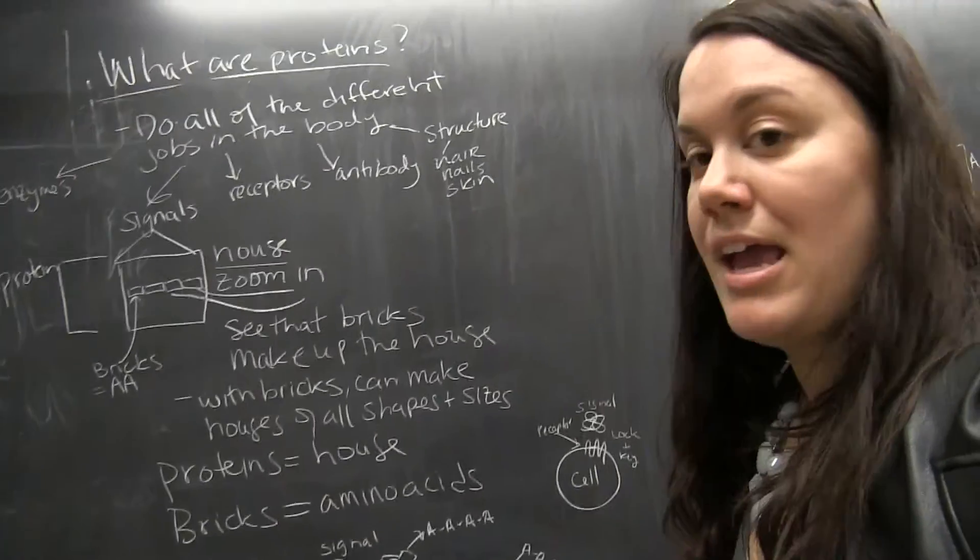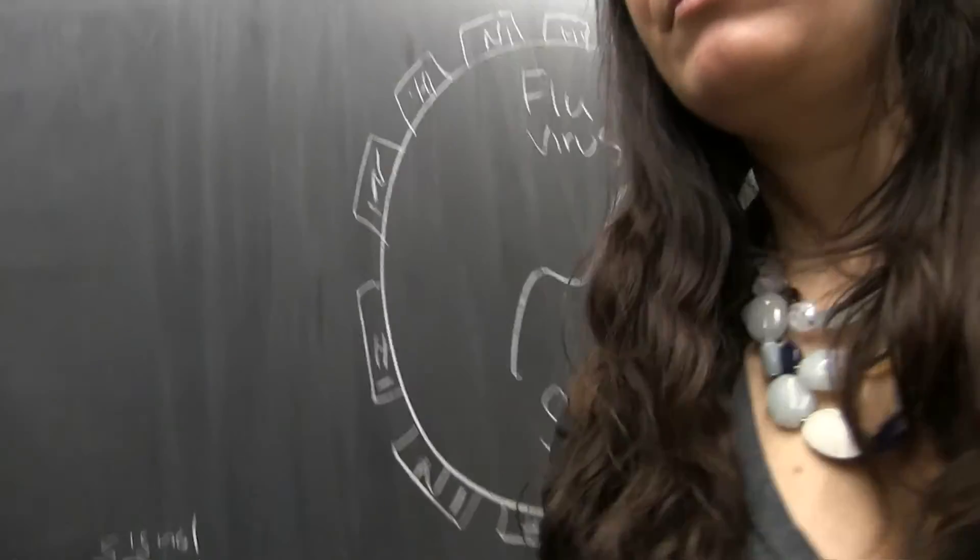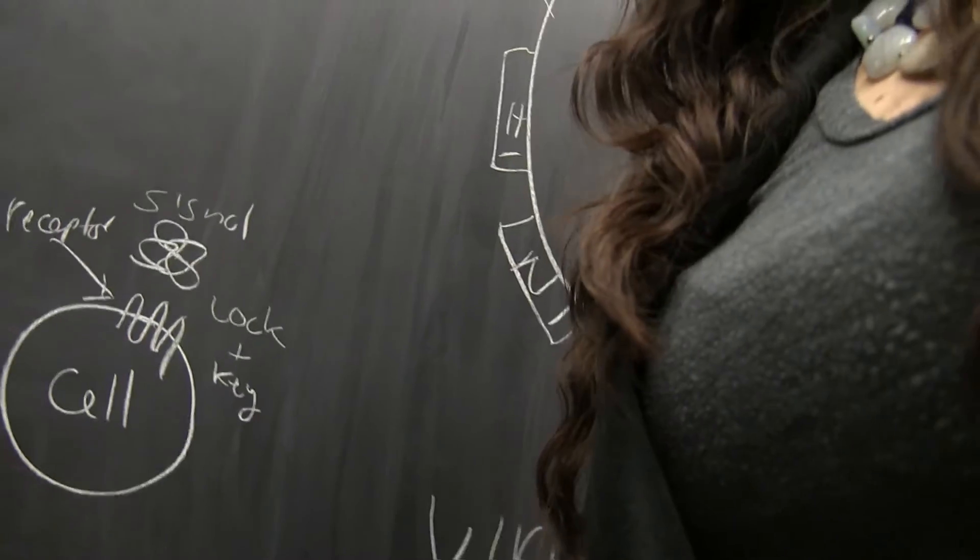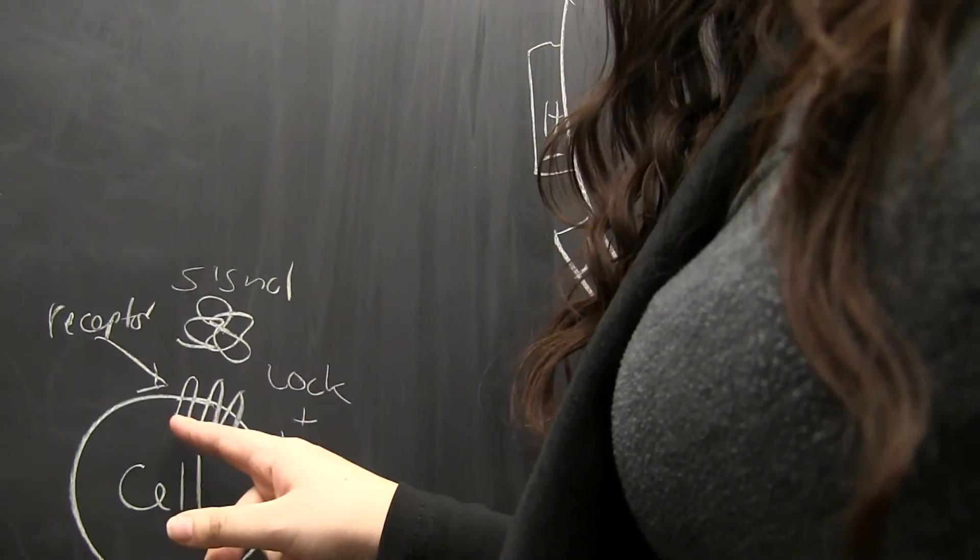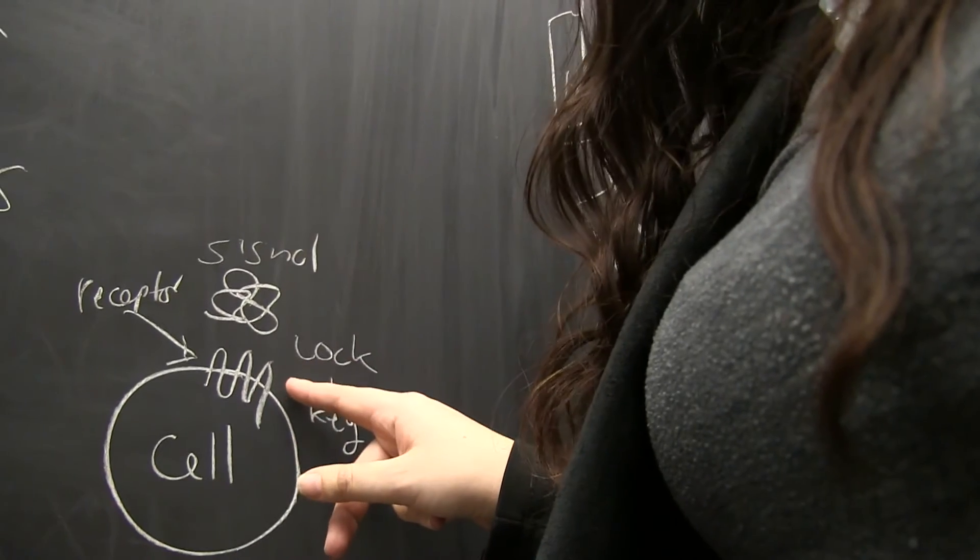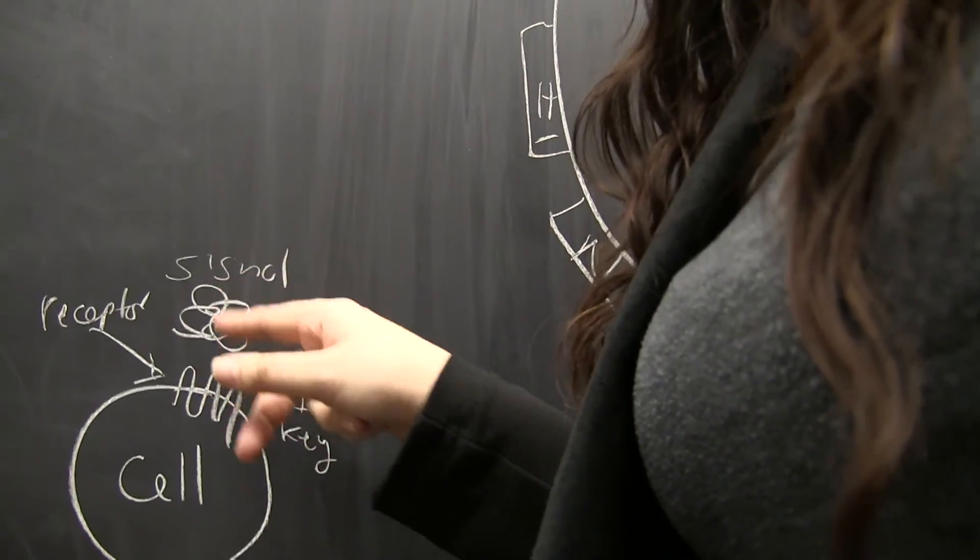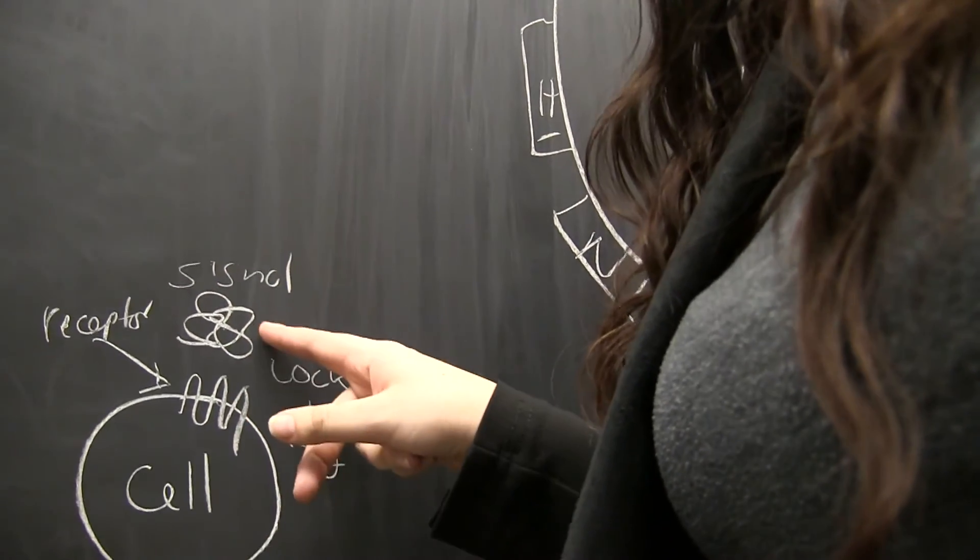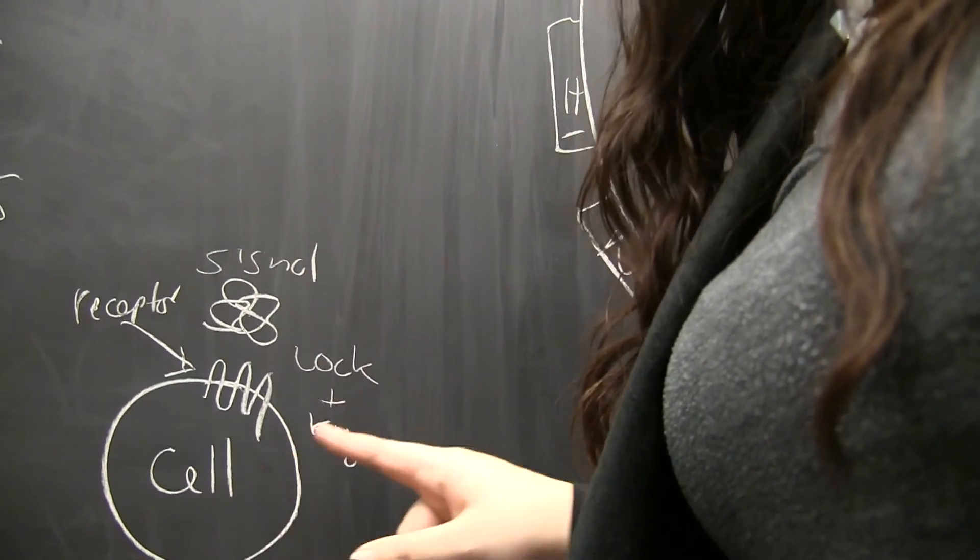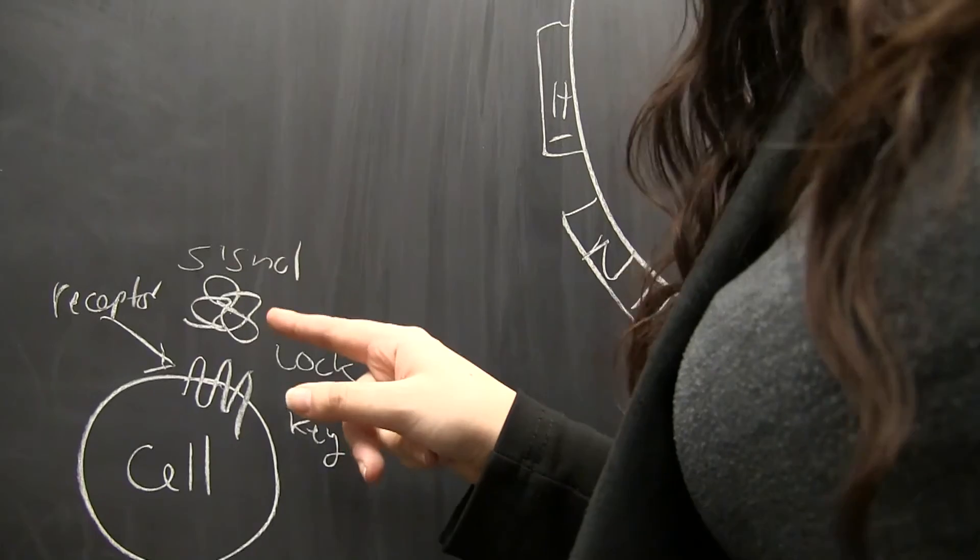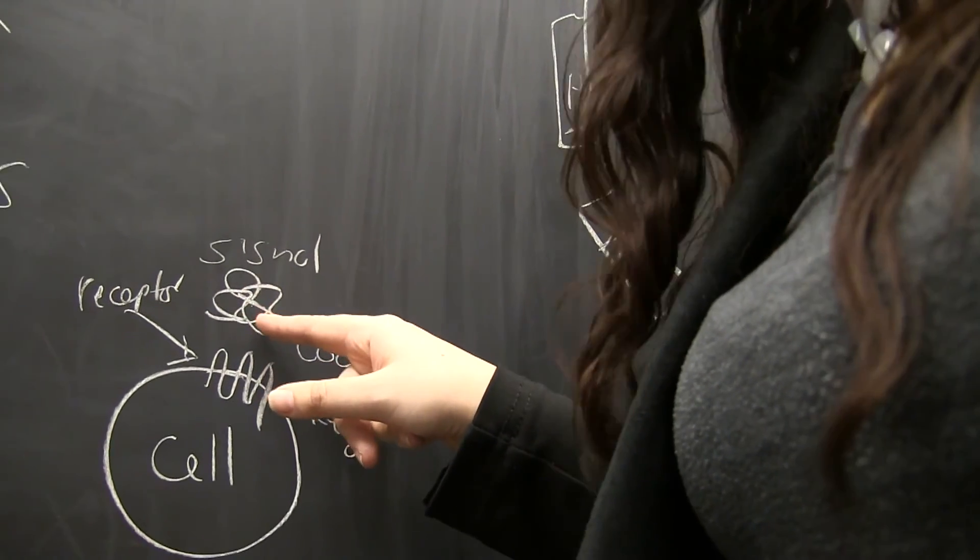And this is really important because if we look here at our cell, the receptor is the squiggly line. We see our signal is this globular chain of amino acids. The signal and receptor is like a lock and key, so the signal has to have a very specific shape to be able to dock at or attach at this receptor.